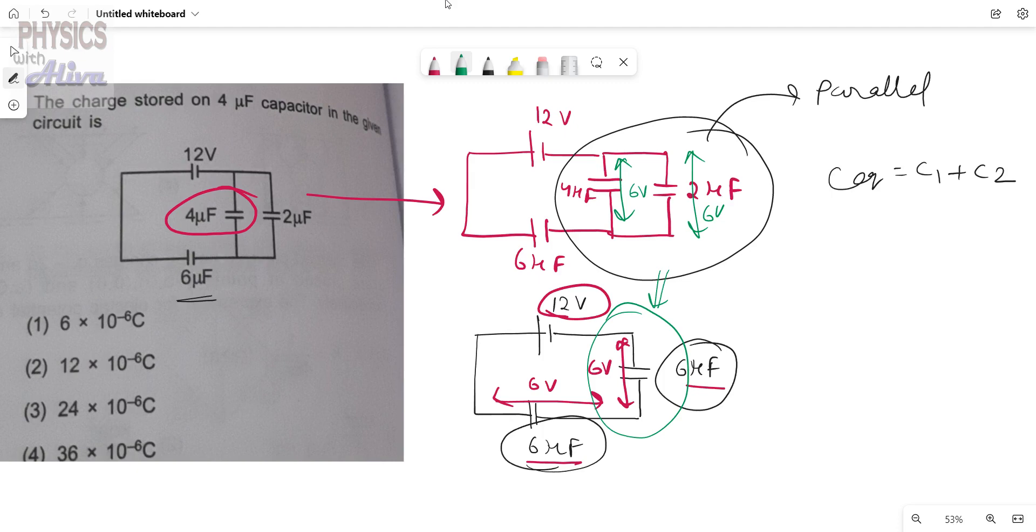So from here we get the potential difference across the 4uF capacitor is 6V. We know the formula Q equals CV.